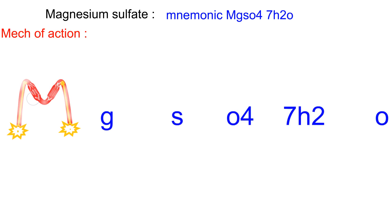We will start with the mechanism of action. It decreases calcium entry to muscle cells and decreases acetylcholine release from the neuromuscular junction.